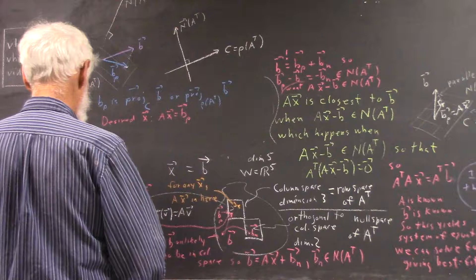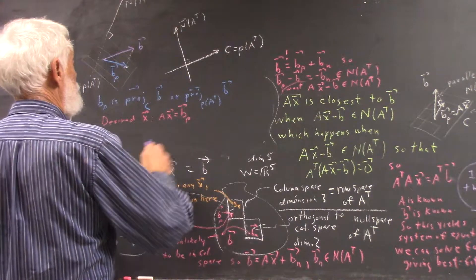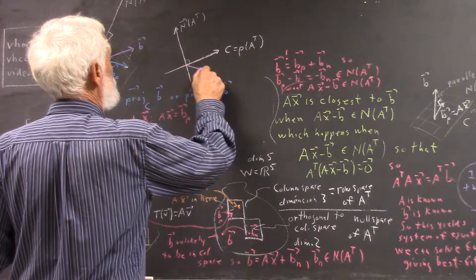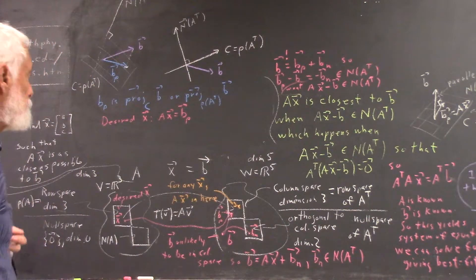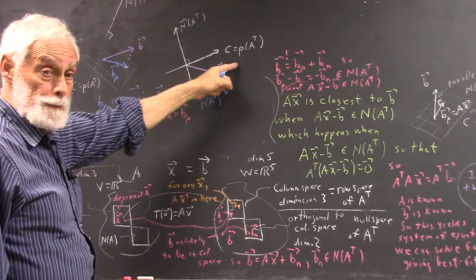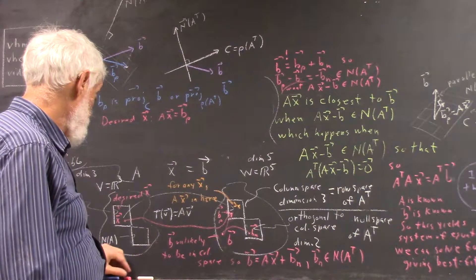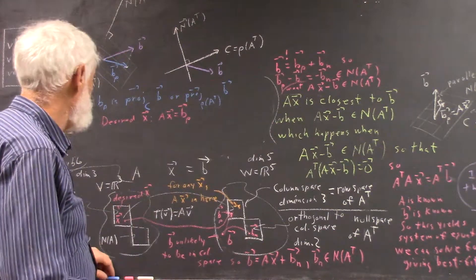Our B vector, as always, cannot be expected to be in our column space for reasons that we've mentioned a number of times that I'm not going to mention again.